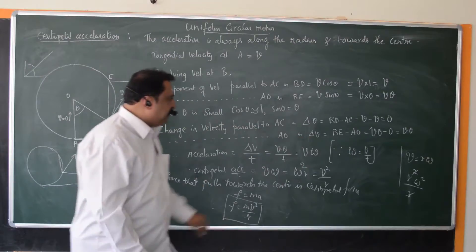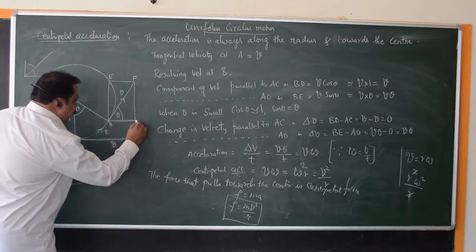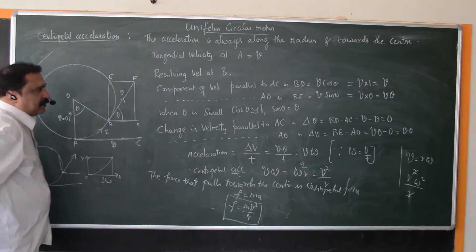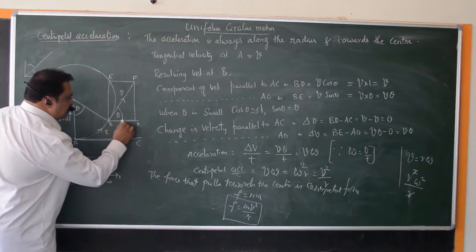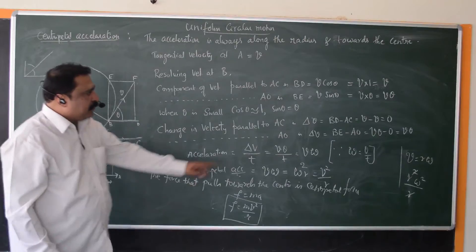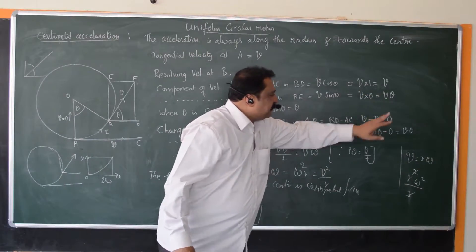Change in velocity is denoted as delta V. Now it is BD minus AC. Velocity along AC is V. Velocity along BD is also V. So V minus V. V minus V cancels out.